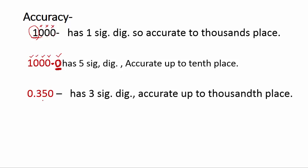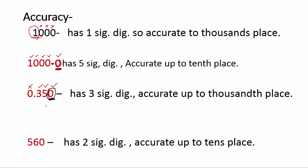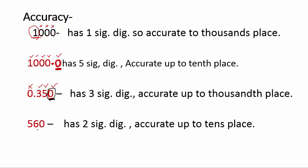Next, 0.350: this number has a decimal, leading zeros are not significant, the digits 3 and 5 are significant, and the trailing zero is significant because the number has a decimal — so it has 3 significant digits. This number is accurate up to the thousandths place. For 560: this number does not have a decimal, so the trailing zero is not significant. Only 5 and 6 are significant digits — 2 significant digits — so only the tens place is accurate, meaning this number is accurate up to the tens place.